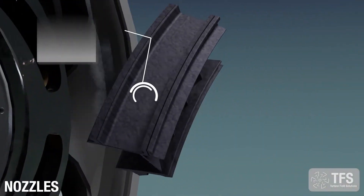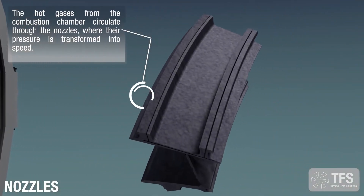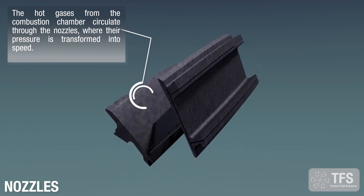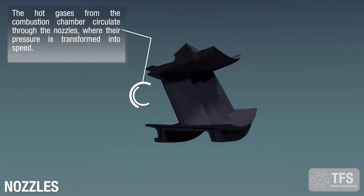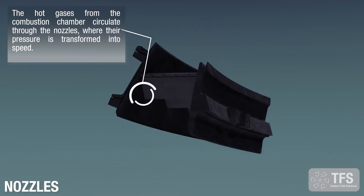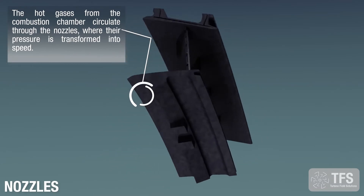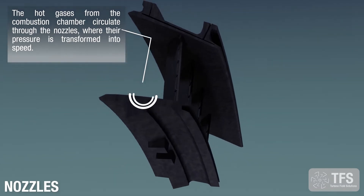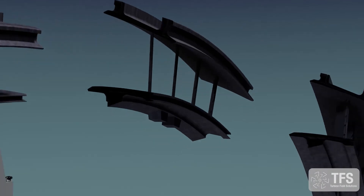Nozzles. The hot gases from the combustion chamber circulate through the nozzles, where their pressure is transformed into speed.